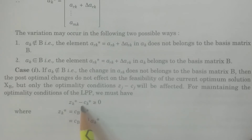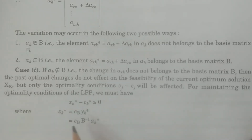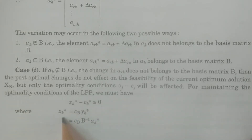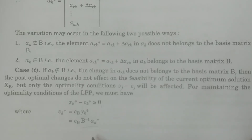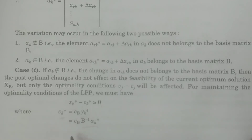To maintain the optimality condition, we must keep zk-star minus ck-star greater than or equal to zero, because we are recalculating only the net evaluation in that particular column. Now, zk-star equals cb times yk-star, and in matrix form this is cb times yk-star, where yk-star equals B-inverse times ak-star. So z is expressed as cb times B-inverse times A; for the kth column, zk-star equals cb times B-inverse times ak-star.